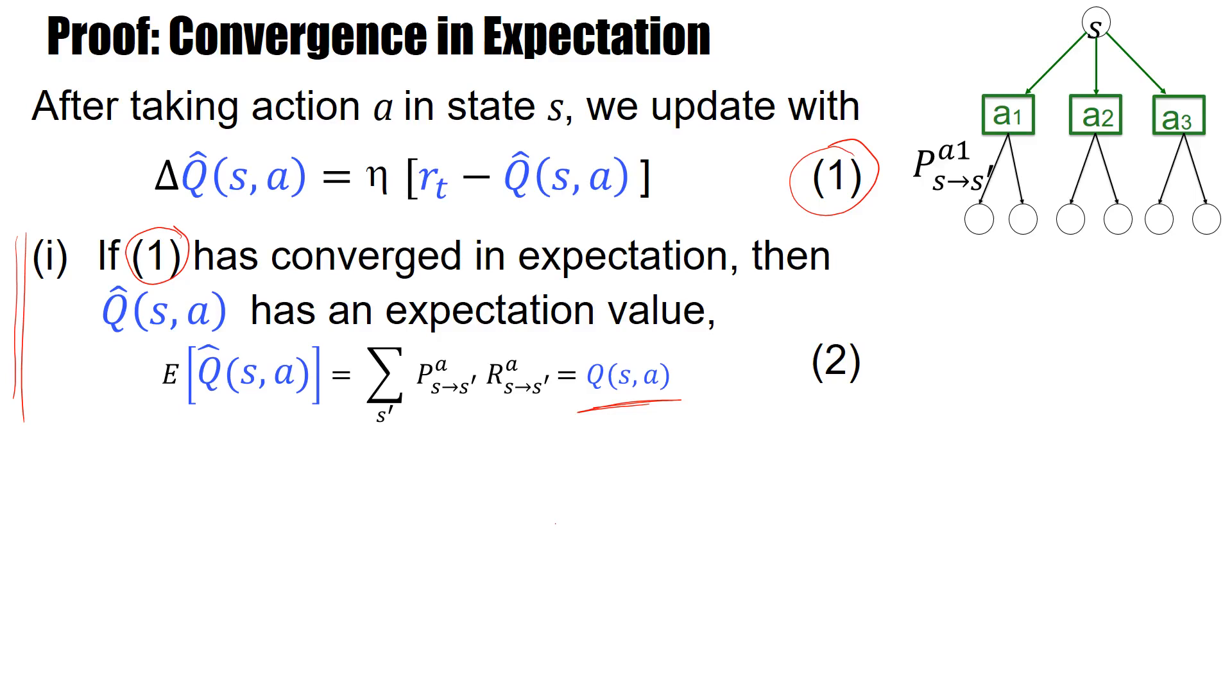So let's do this. What's the hypothesis? If this update rule 1 has converged in expectation, the hypothesis is that the expectation of delta q has converged, and that means it's equal to zero. So then let's write this out. Expectation delta q hat of s,a equals zero, and that's the expectation of eta times r minus q hat of s,a, and this is zero.